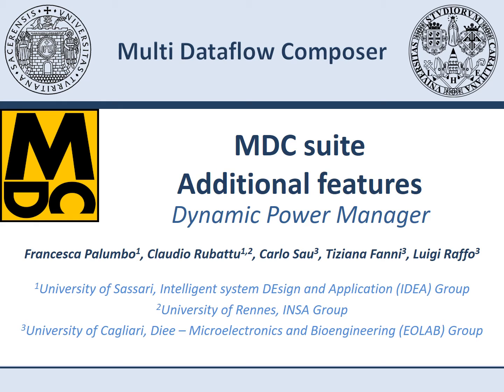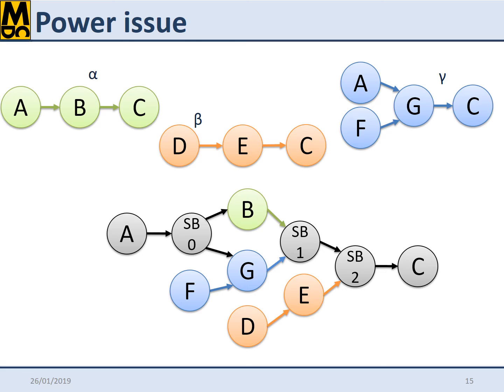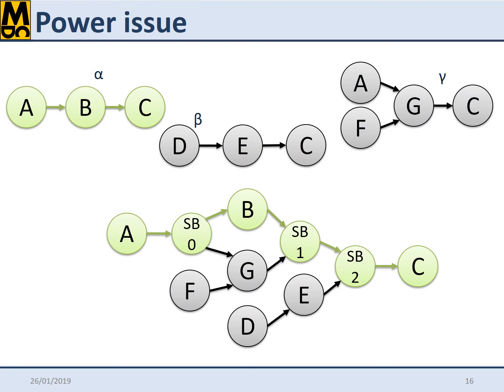The second feature added to the MDC Framework is a dynamic power manager. This feature is specifically intended to guarantee power efficiency of the composed substrate. In coarse-grain virtually reconfigurable datapaths, as those composed by MDC, the different input specifications are never executed at the same time. Reconfiguration is achieved by multiplexing resources in time.